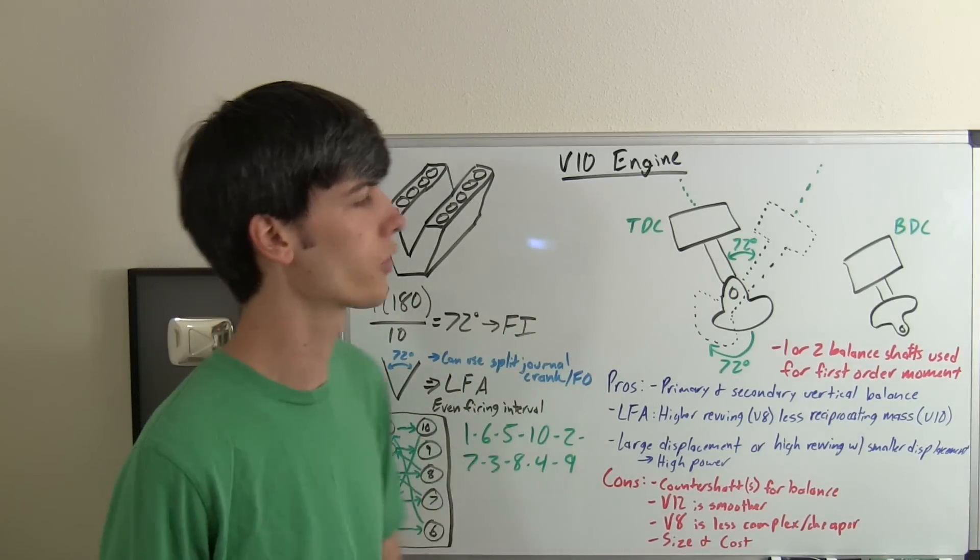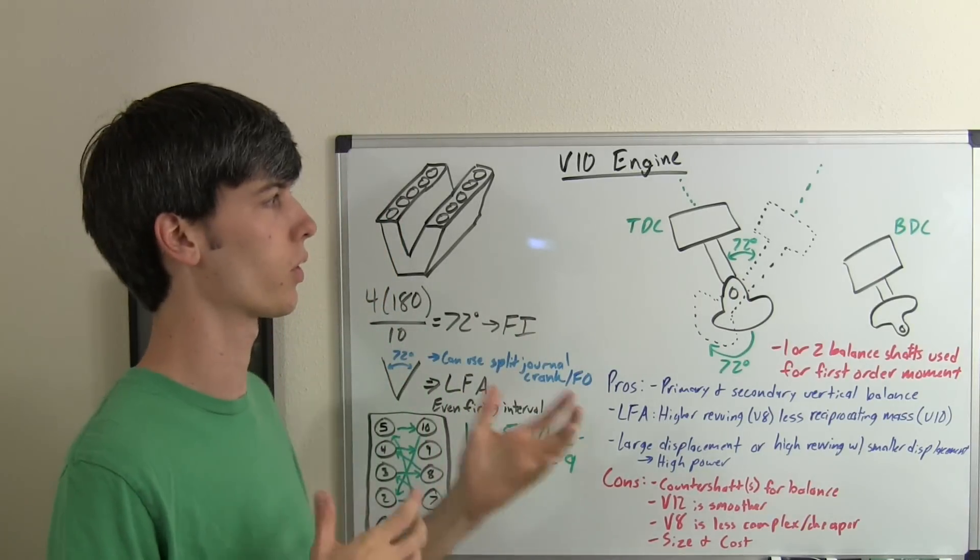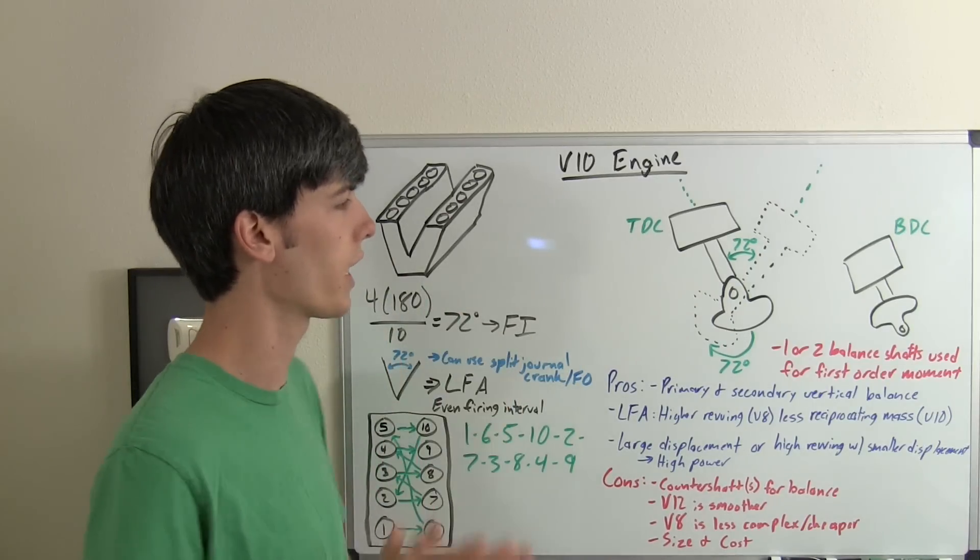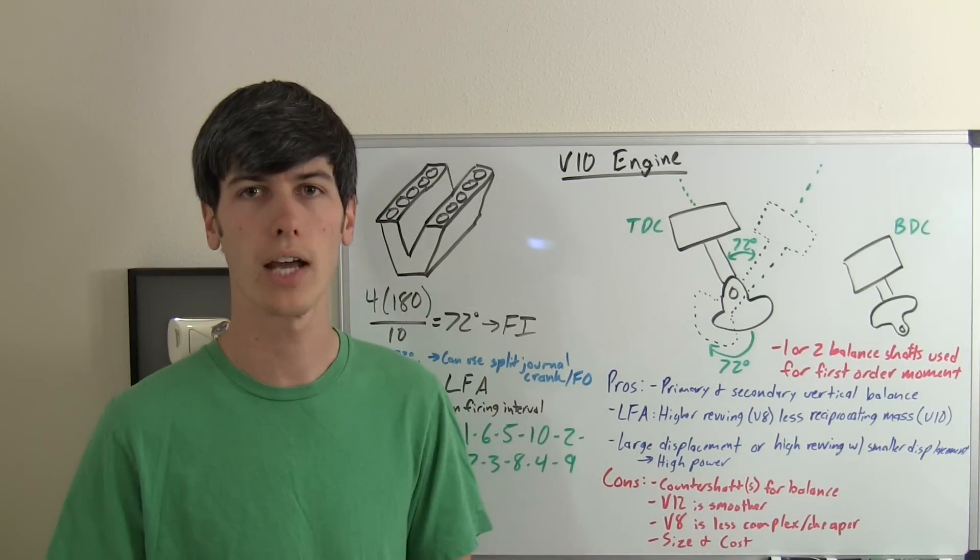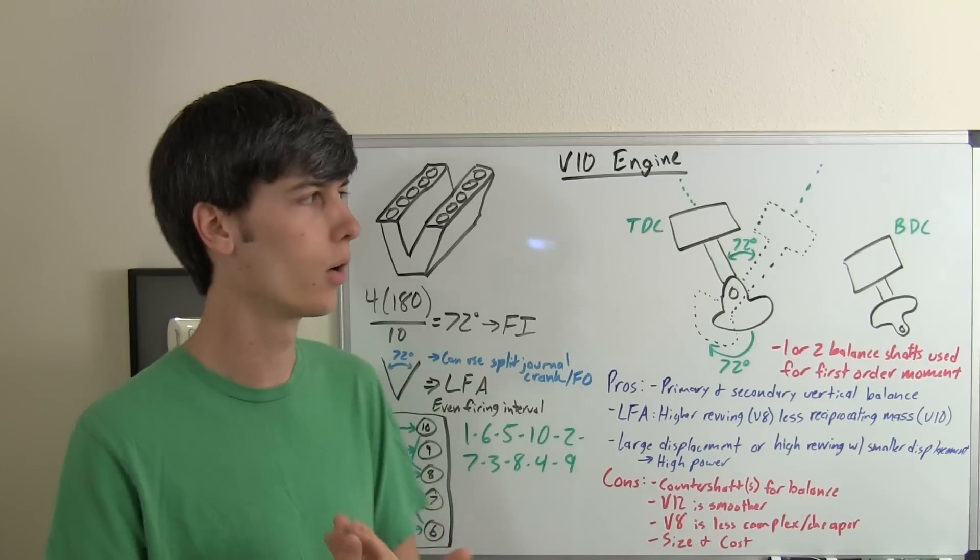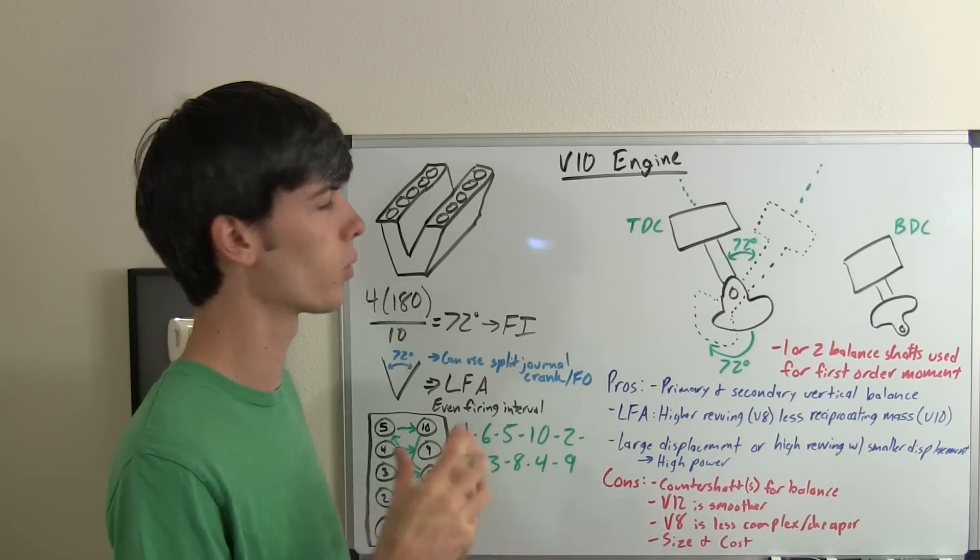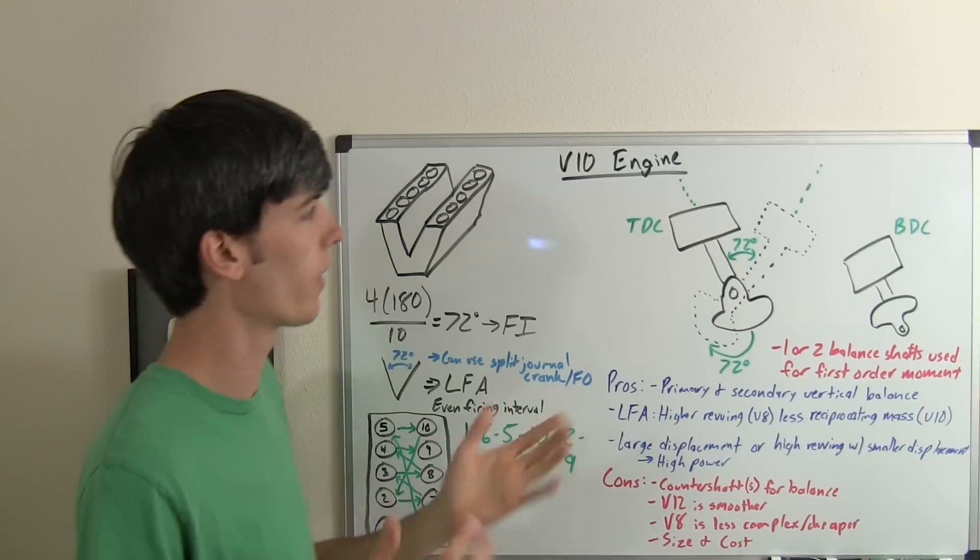V10s could use one or two balancing shafts in order to help balance that moment that's created. For example, if you use a 90 degree V10, you can have two balancing shafts which actually cancel one another out when they're not canceling the moment, so you don't have that additional vibration. That could be a good way of doing it from a vibration standpoint.